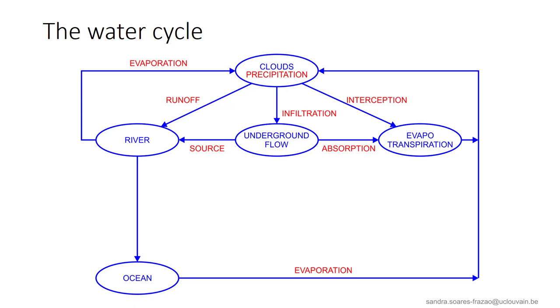The vegetation releases water by evapotranspiration, while rivers and oceans lose part of their waters by evaporation. The water reaching the clouds by evaporation and evapotranspiration then produces new precipitation.